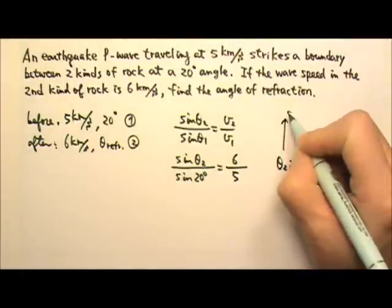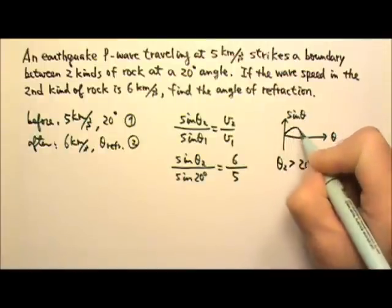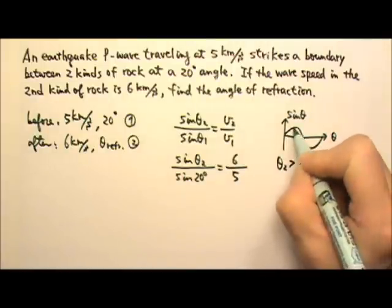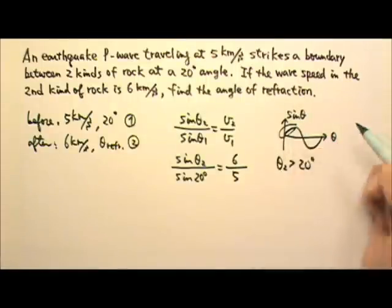because the sine graph looks like this. When the angle is less than 90 degrees, the bigger the angle means the bigger the sine theta.